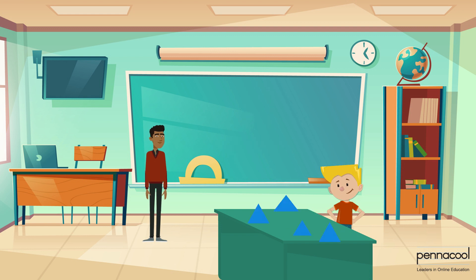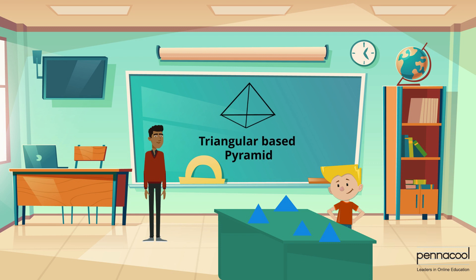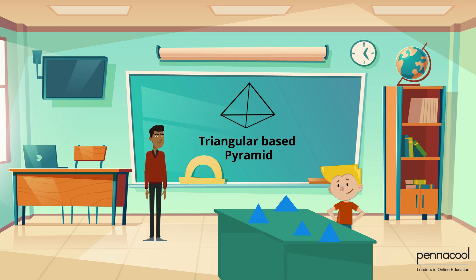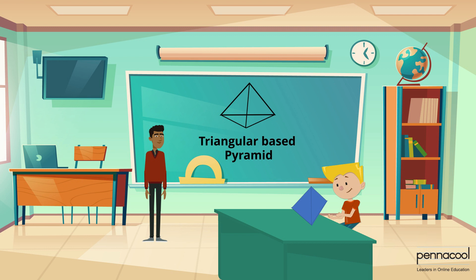The last shape he is given is a triangular-based pyramid. The base, as well as the other 3 faces of the solid, are all triangles. Christoph then puts them together.